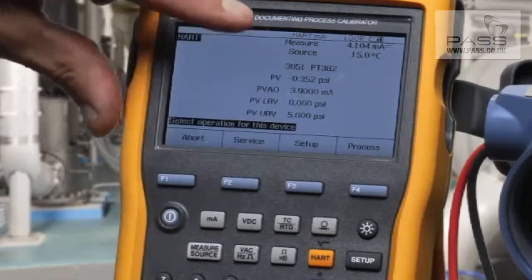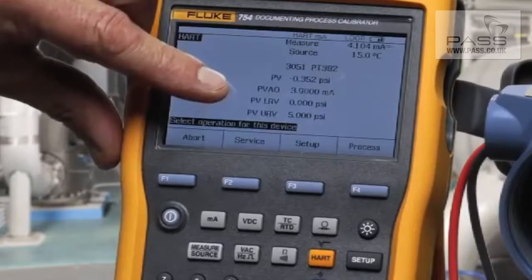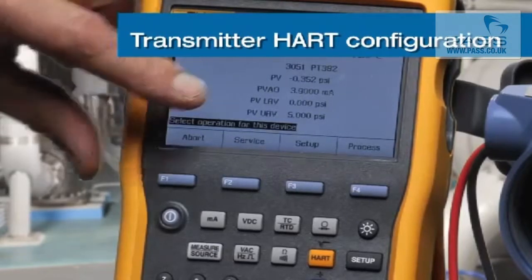On the initial handshake, we see the tag of the transmitter, its PV, the PVAO, and its ranging, 0 to 5 psi in this example.